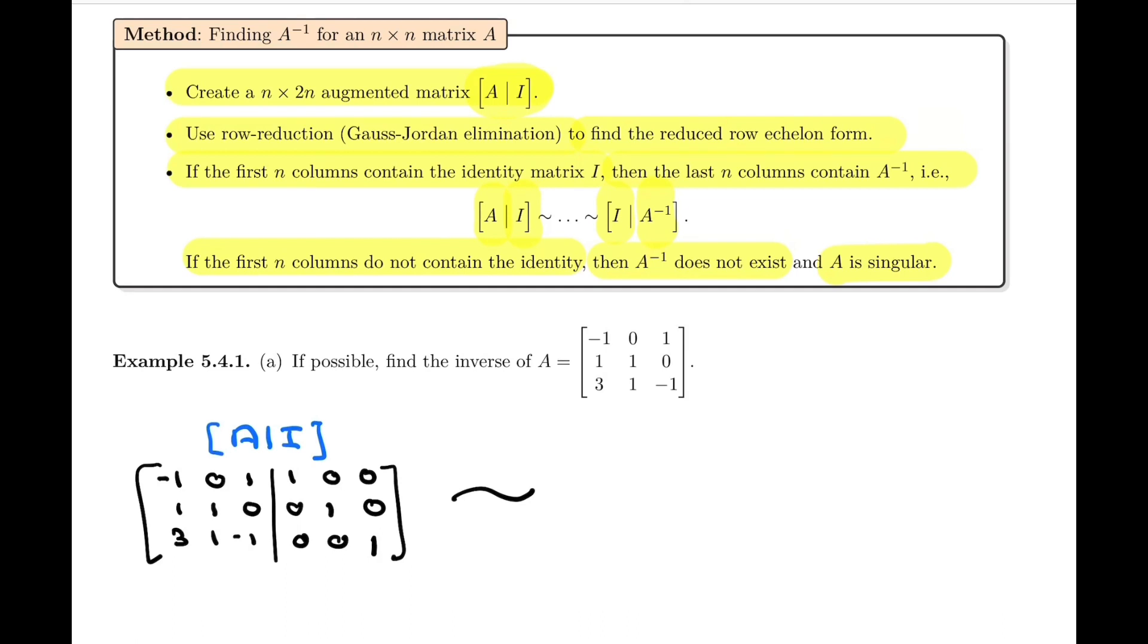You notice here we can deviate from the algorithm a little bit. Instead of turning the minus 1 into 1 right away, let's use it to get rid of the 1 and the 3 underneath. So row 2 plus row 1 becomes the new row 2, and row 3 plus 3 row 1 becomes the new row 3.